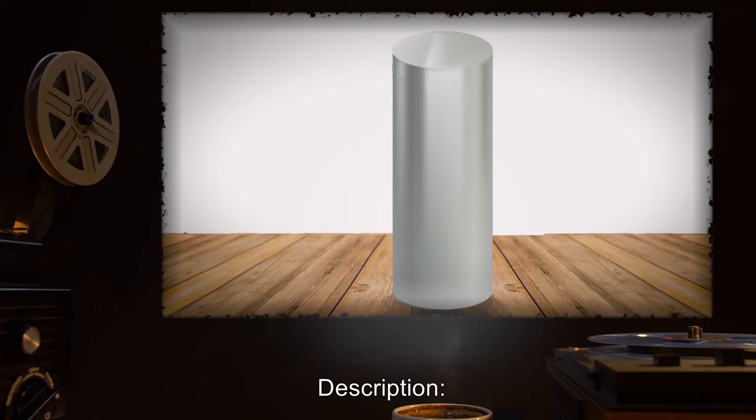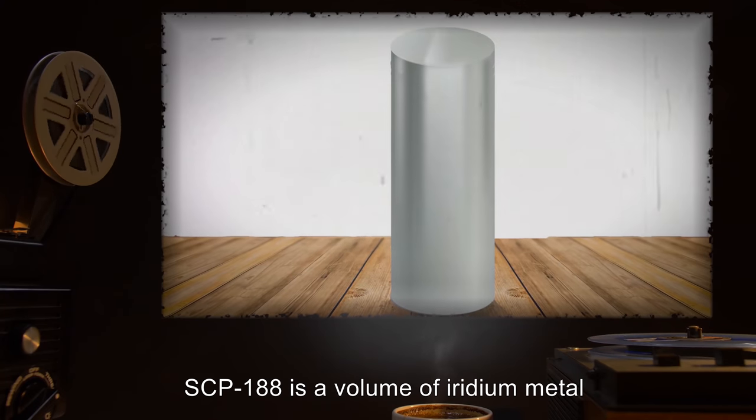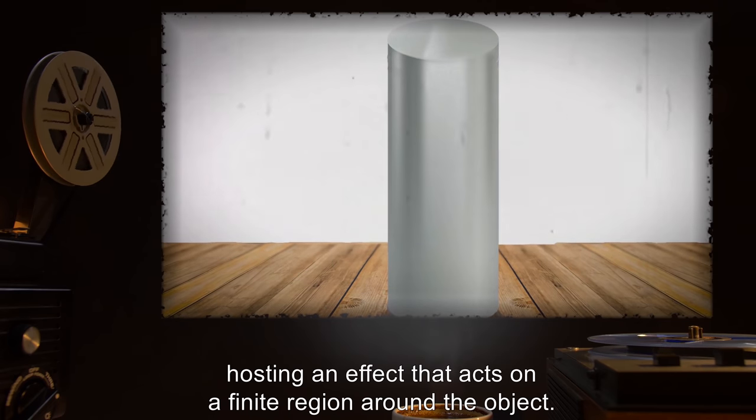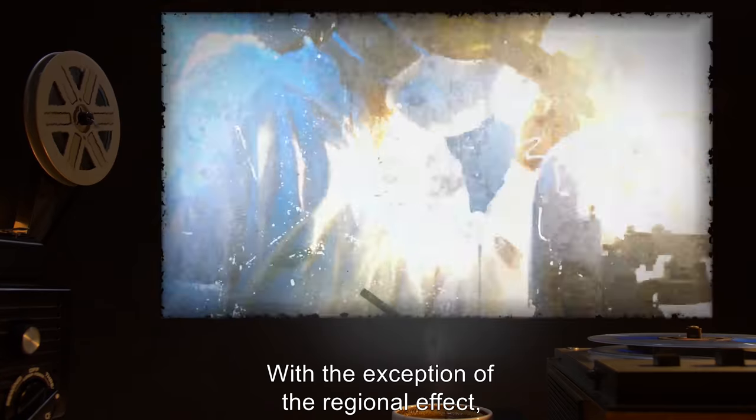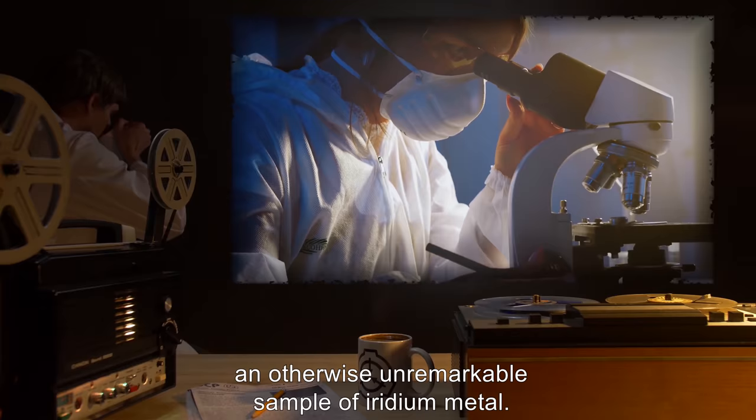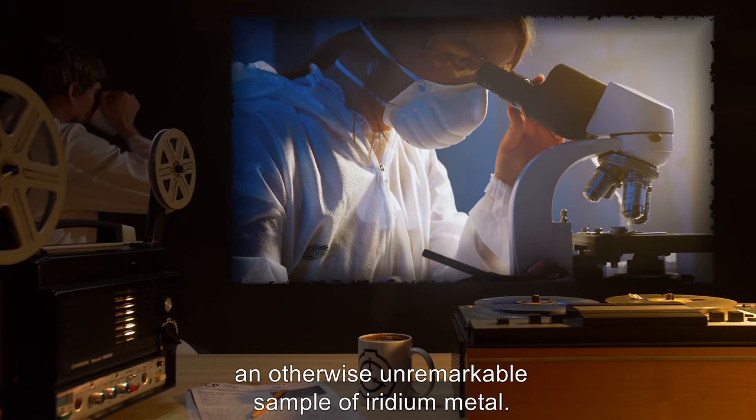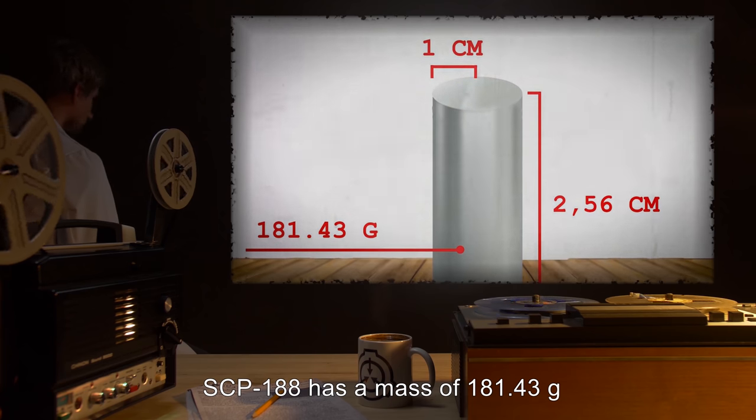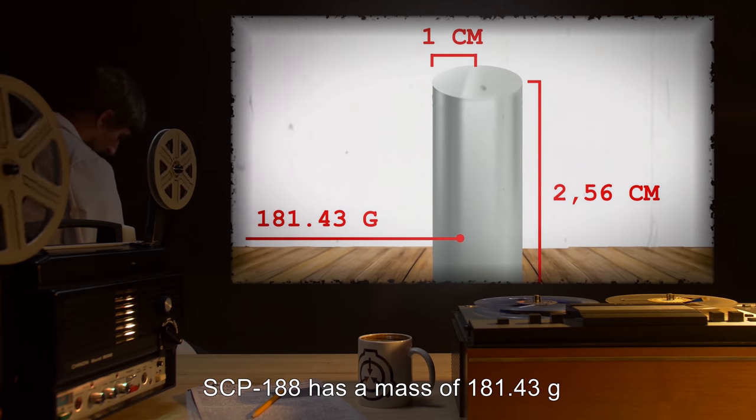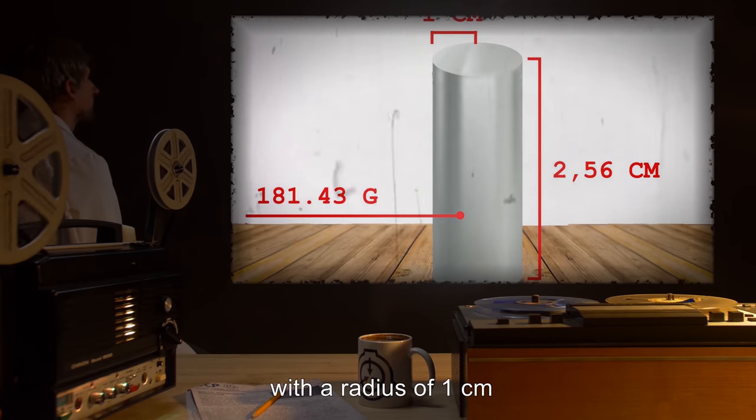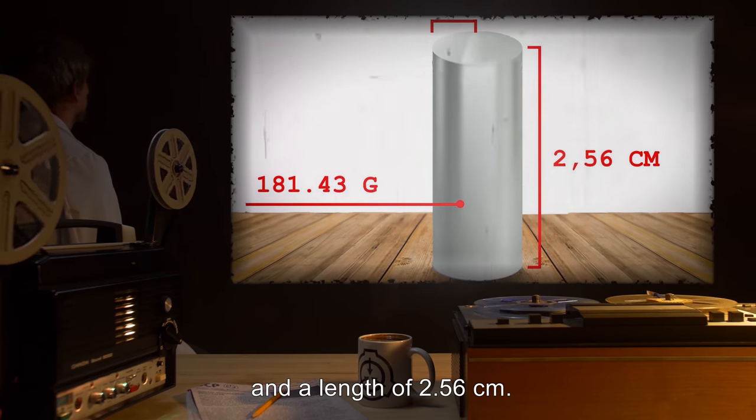Description: SCP-188 is a volume of iridium metal hosting an effect that acts on a finite region around the object. With the exception of the regional effect, SCP-188 is chemically and physically an otherwise unremarkable sample of iridium metal. SCP-188 has a mass of 181.43 grams and has been cast as a cylinder, with a radius of 1 cm and a length of 2.56 cm.